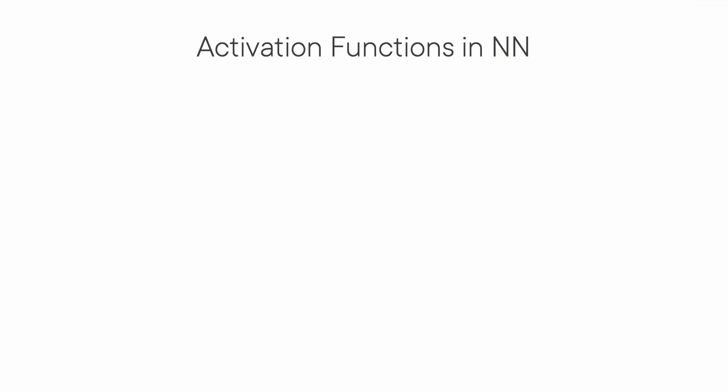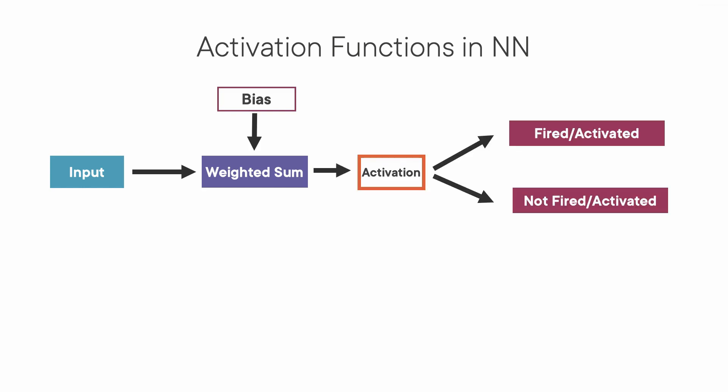Let's talk about activation functions. Remember that a simple neuron takes the input, calculates the weighted sum, adds a bias, and finally decides whether it should be fired or not. In other terms, it should be activated or not. That's why we call this function the activation function.